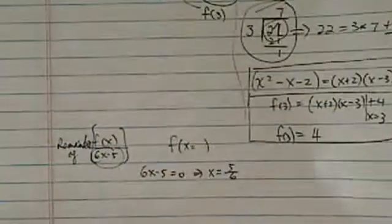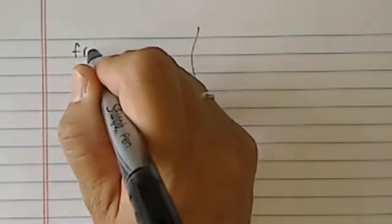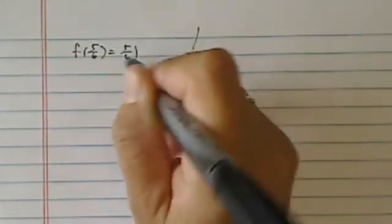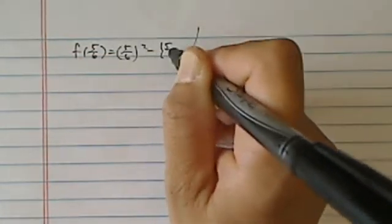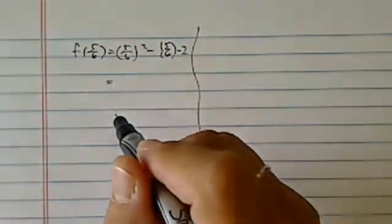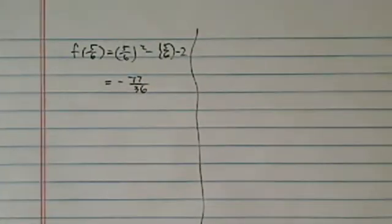In the next few minutes, we're going to show you that they end up to be exactly the same. And hopefully, by the end of this little clip, you will never do a long division to find the remainder. f of 5 over 6 is equal to 5 over 6 squared minus 5 over 6 minus 2. And this one came out to be minus 77 over 36, which is pretty easy to do.